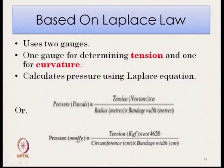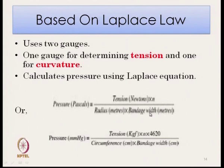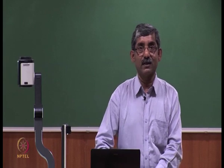Based on Laplace law, there are instruments using two gauges — one gauge for measuring the tension and another for measuring the curvature. These two factors are required to calculate pressure using Laplace law. The pressure in Pascals equals tension (N) multiplied by N (number of layers), divided by radius of curvature and bandage width. The number of layers and bandage width are known from the wrapping; tension and radius of curvature are obtained from the two gauges.